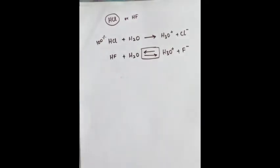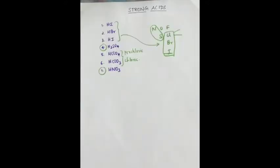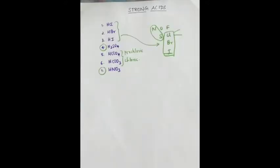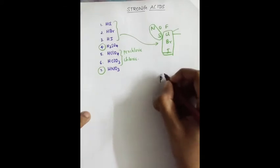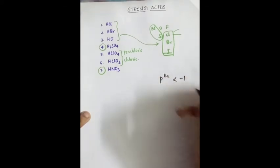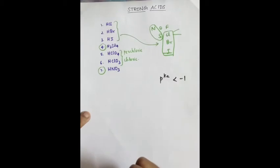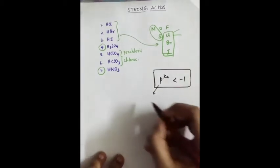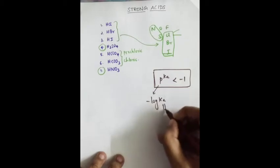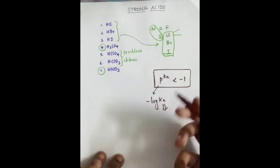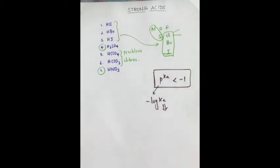So this is the difference between strong acid and weak acid. One useful measure is the pKa value. For strong acids, pKa is less than minus 1. pKa is nothing but minus of log Ka, where Ka is the dissociation constant — meaning how much the acid dissociates.